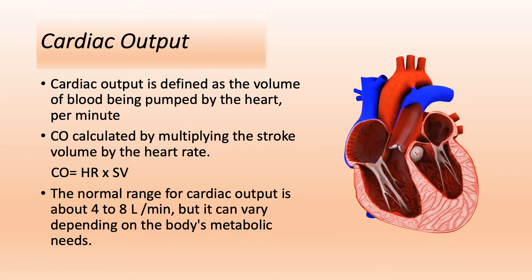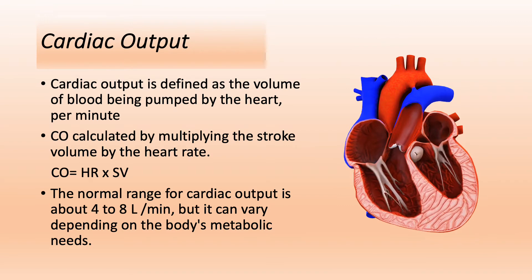The normal range for cardiac output is about 4 to 8 liters per minute, but it can vary depending on the body's metabolic needs. Notice how large that range is — 4 to 8 is almost double.